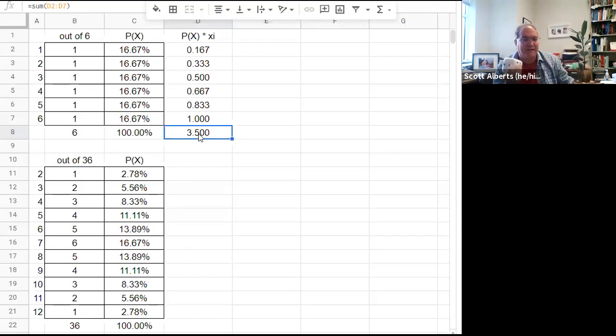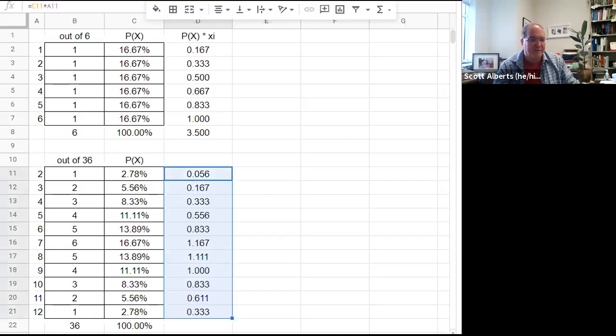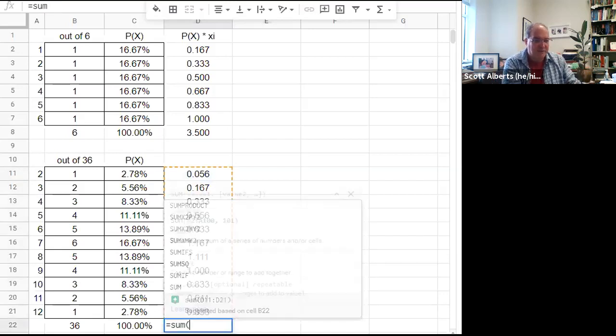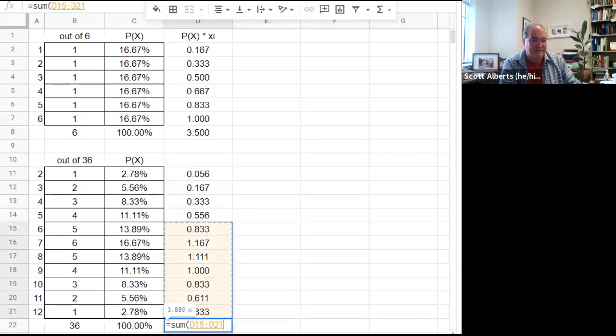I'm going to calculate it here in a second. So the average of one die should be half of that. If you figure that each of these six outcomes are equally likely if we add those all together and divide by three we get three and a half. We can do the same thing here. We just take each outcome times the probability. Now we have 2.78 percent times two and we can drag that down and do that for all of them. It's not so surprising that the average of rolling two dice is a seven.